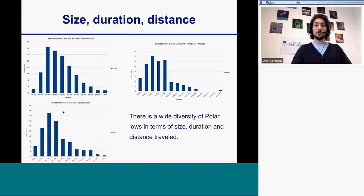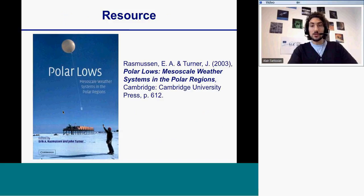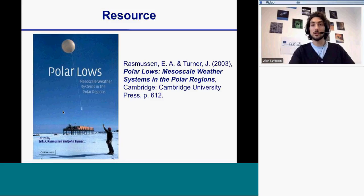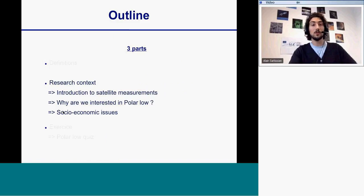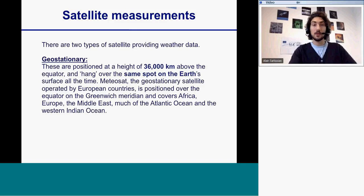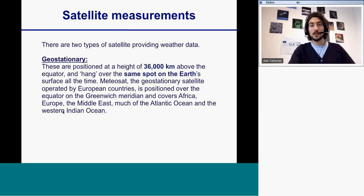I will show the diversity of polar lows, and I will also give a reference to the most important book about this topic if you want more information to discuss in class. For the second part, which is more about the research context, I will give an introduction about satellite measurements, explaining that we started collecting data from satellites from the 1960s and that it changed a lot our way of working in meteorology.